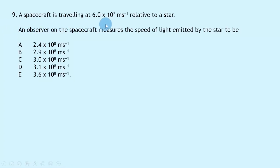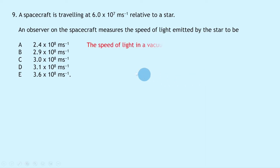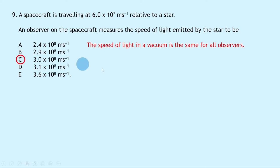Question 9 says a spacecraft is traveling at 6.0 × 10⁷ m/s relative to a star. An observer on the spacecraft measures the speed of light emitted by the star. Using Einstein's two postulates of special relativity — specifically that the speed of light in a vacuum is the same for all observers — the answer is 3.0 × 10⁸ m/s regardless of the observer's speed, giving answer C. It might seem like a trick question, but it tests that key fact.